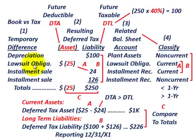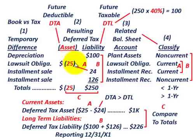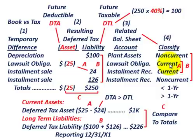Now let's say we have a lawsuit — some obligations that we have to pay on a lawsuit. In this case, it's a deferred tax asset, meaning there's a future deductible amount for tax purposes. The related balance sheet account would be the lawsuit obligation, which is classified as a current liability because it would be paid within less than one year.